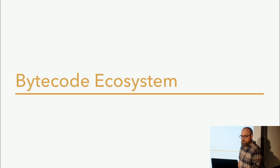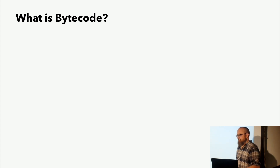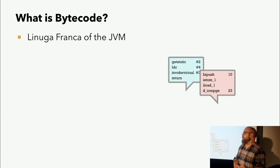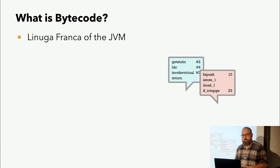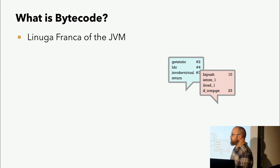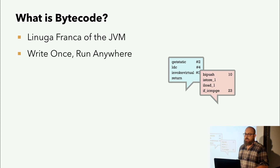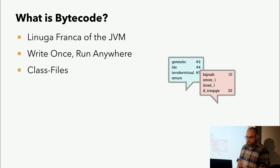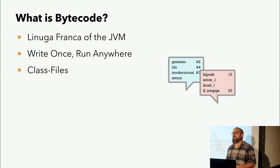Fangen wir an mit dem Bytecode-Ökosystem. Was ist eigentlich Bytecode? Bytecode ist eine Zwischenrepräsentationssprache der JVM. Die JVM führt eben nicht den nativen Code aus, sondern eben Bytecode. Das ist kein neues Konzept. Es gibt auch viele andere Sachen, die das machen: .NET, WebAssembly, das ist auch alles eine Zwischenrepräsentation, die von einer Runtime ausgeführt wird. Daher kommt eben auch das Write-Once-Run-Anywhere-Prinzip, wie das Java so bekannt wurde. Bytecode lebt in Classfiles und deswegen ist es essentiell, dass man eben auch mit Classfiles arbeiten kann.